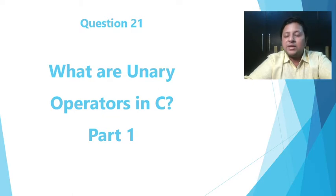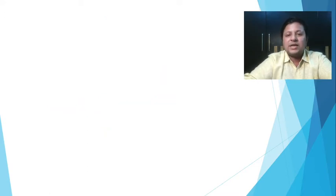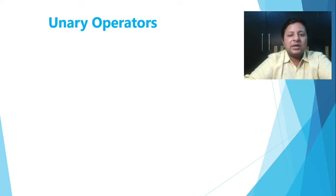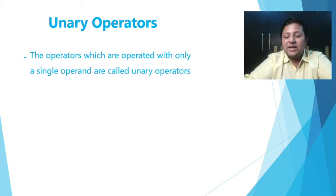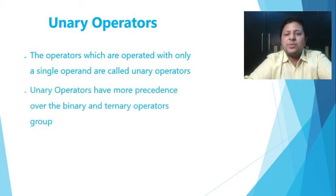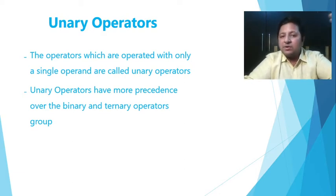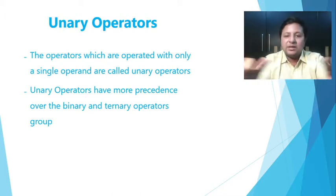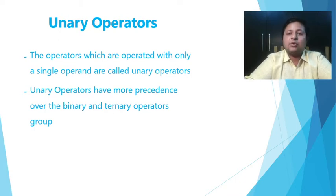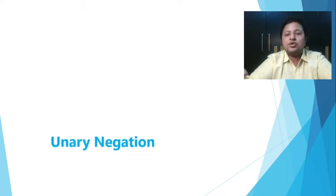So unary operators also are nothing but one of the very important types of operators, and we are going to see each one of them in detail. So I preferred keeping it into parts. So the next video also you will be able to see the remaining unary operators. So let's go ahead. This being the first one, we will first understand what are the unary operators and then we will see each one in detail. So starting with what are unary operators. As the name suggests, unary, it is something that is going to work with a single operand. So we can define unary operators as the operators which are going to work with a single operand only. So whenever it comes to precedence, unary operators will have more precedence over binary as well as ternary.